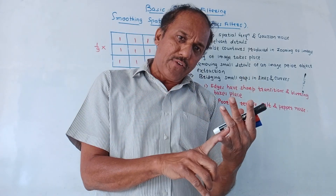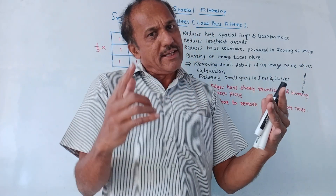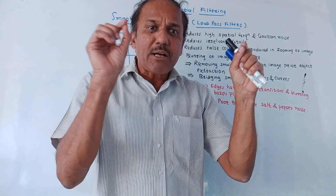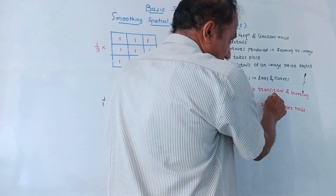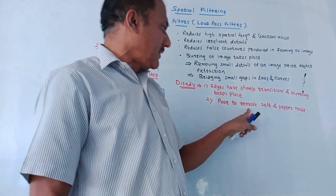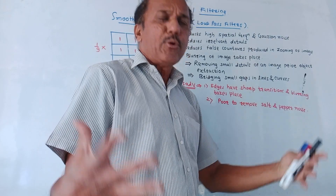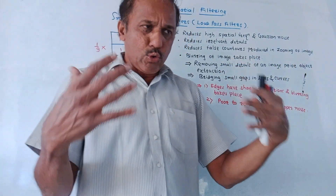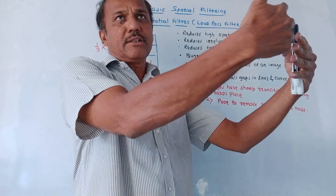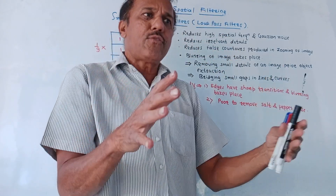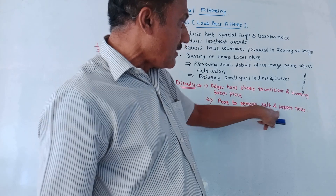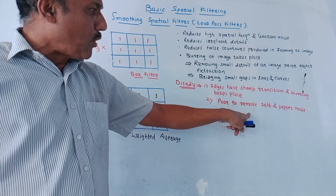The disadvantages are: in this type of filtering, blurring of the image takes place, which is required in pre-processing, but in almost every image there are sharp transitions at the edges. Blurring of edges also takes place — this is the disadvantage of this filter. The second disadvantage is that this filter response is poor for removing salt-and-pepper noise. Salt-and-pepper noise produces black and white spots on the image, for example when transmitting an image through a noisy digital channel. This response is poor for the removal of salt-and-pepper noise.